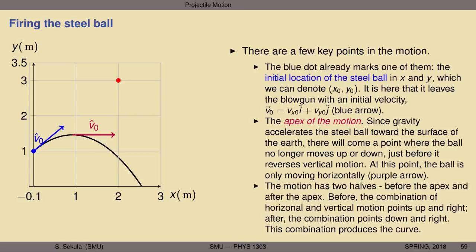The motion has two halves: before the apex and after the apex. Before the apex, the combination of horizontal and vertical motion for the steel ball points up and to the right. After the apex, the combination points down and to the right. This combination is ultimately what produces this curve, whose actual mathematical shape is a parabola.